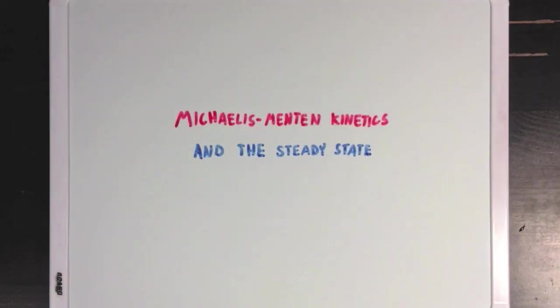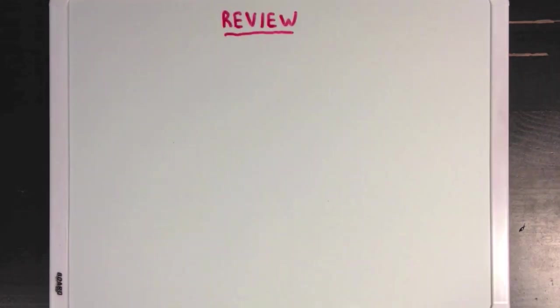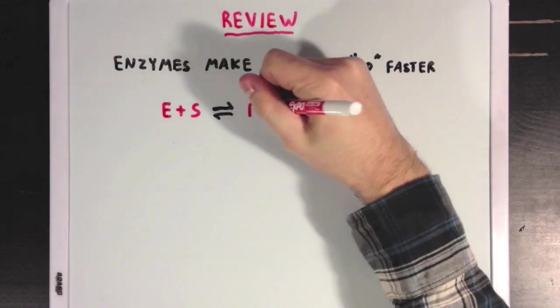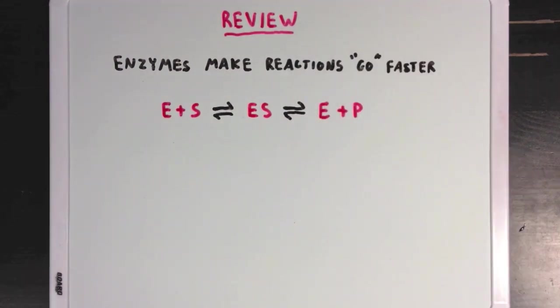So, today we're going to talk about Michaelis-Menten kinetics in a steady state. But first, let's review the idea that enzymes make reactions go faster, and that we can divide the enzyme's catalysis into two steps.